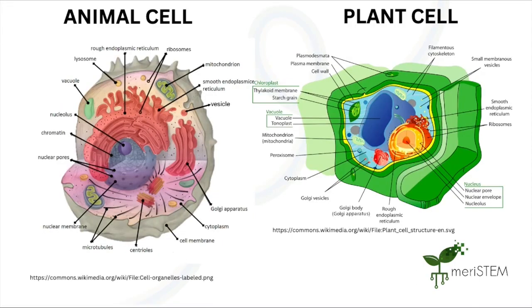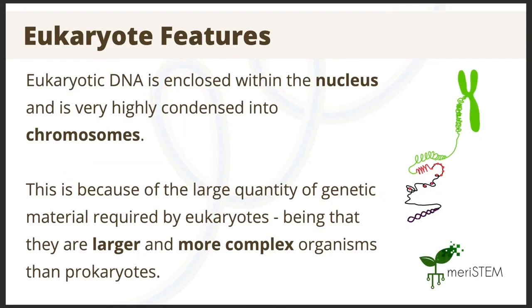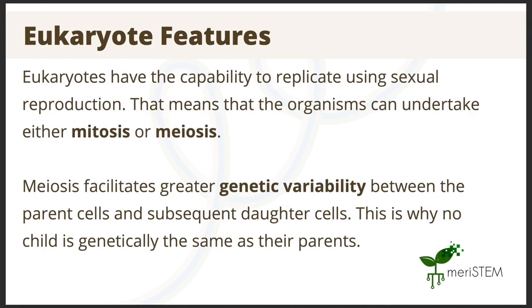Here you can see a more detailed structure of both the animal and plant cells. As eukaryotes have membrane-bound organelles, this means that they store their genetic material within the nucleus. Genetic material is extremely condensed into chromosomes. This genetic material stored within the chromosomes is replicated by either mitosis or meiosis. By undertaking meiosis, eukaryote DNA can have greater genetic variability. This is shown when humans reproduce, as genetic material from both parents is exchanged and their offspring contains a mixture of both parents' DNA.